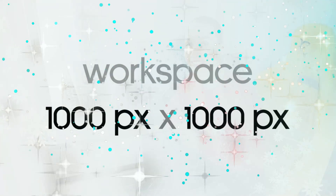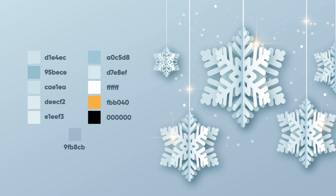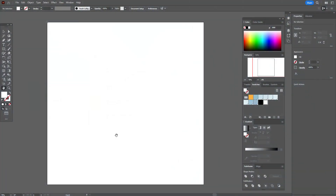Now let's start to draw our snowflake in Adobe Illustrator. This is the size of my workspace and these are the colors I'm going to use in this tutorial. If you want to take a closer look at the design and download an original vector file with colors, you can do it on my Patreon page — the link will be below this tutorial. My workspace is ready and colors are already in the swatches panel.